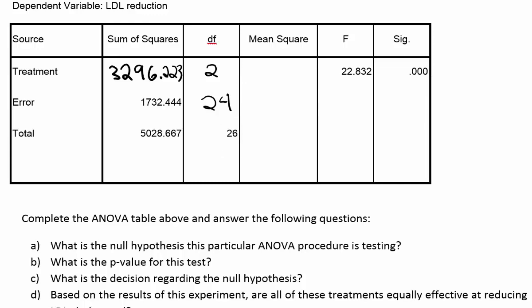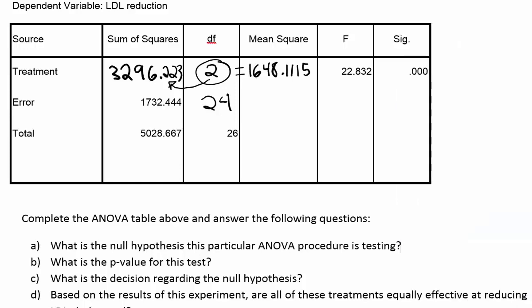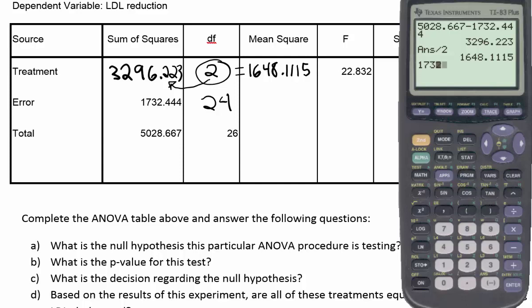Now we have to derive the mean squares by dividing the sum of squares by the degrees of freedom. So we divide 3,296.223 by 2, giving us a mean square for treatment of 1,648.1115. For error, we divide 1,732.44 by 24, and we get 72.185.